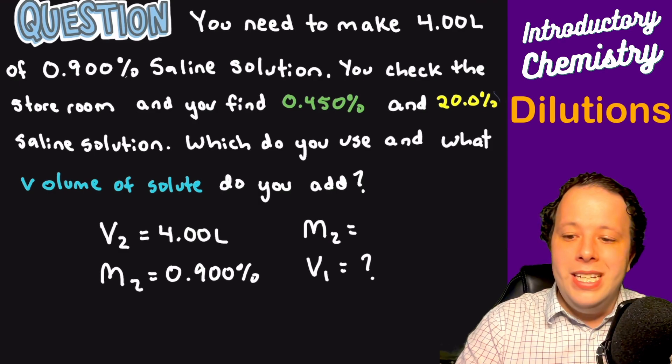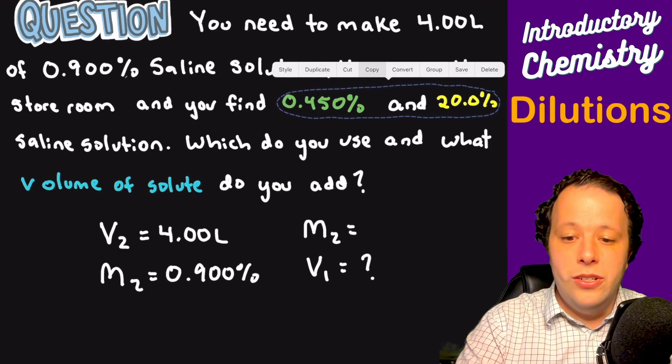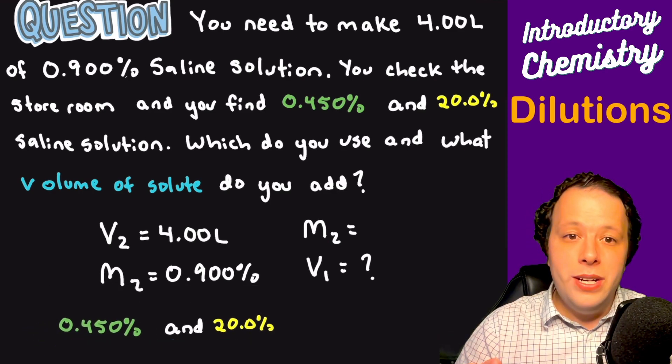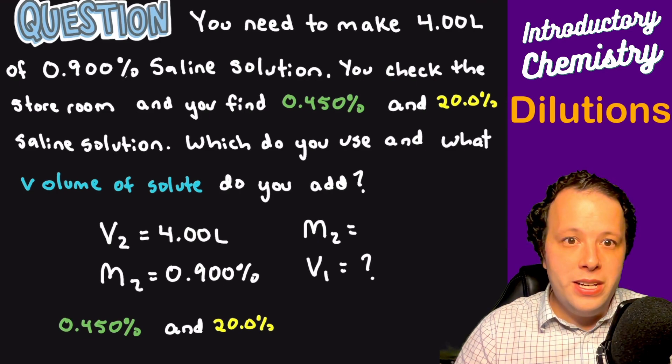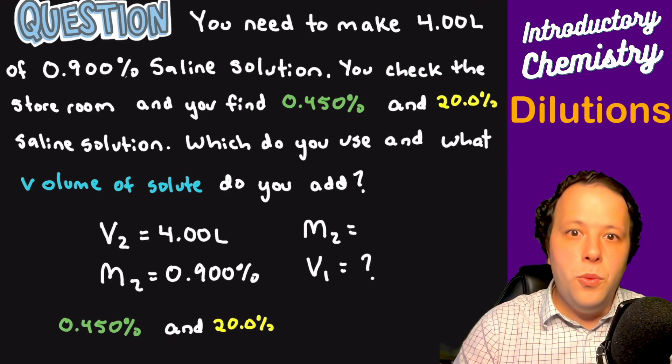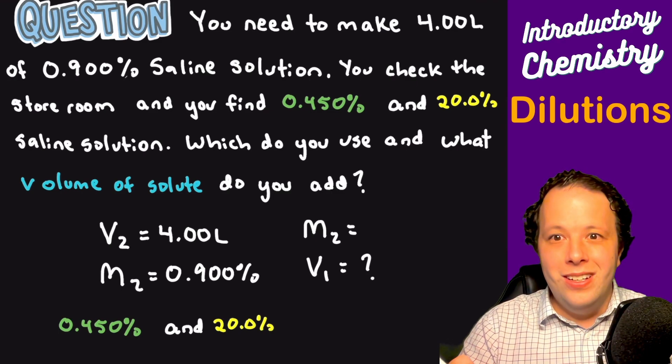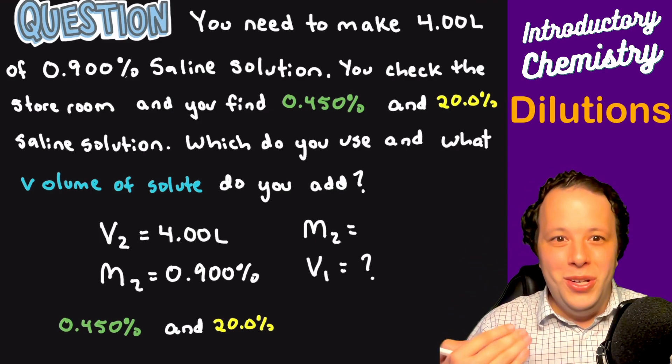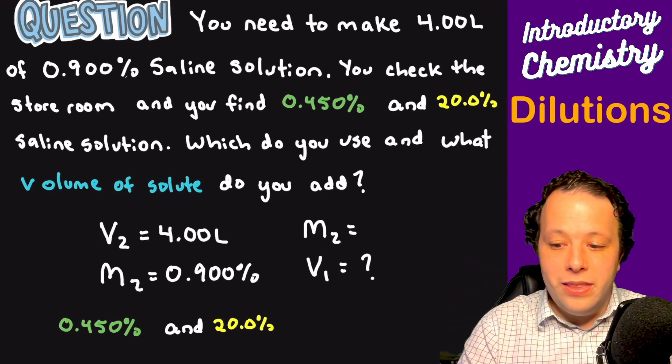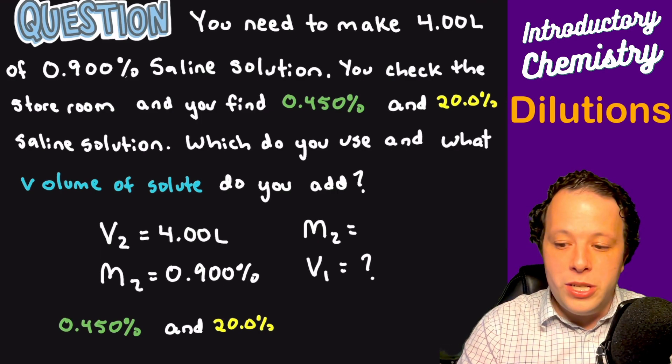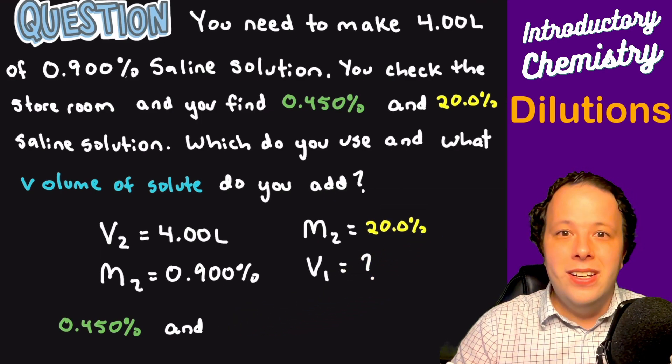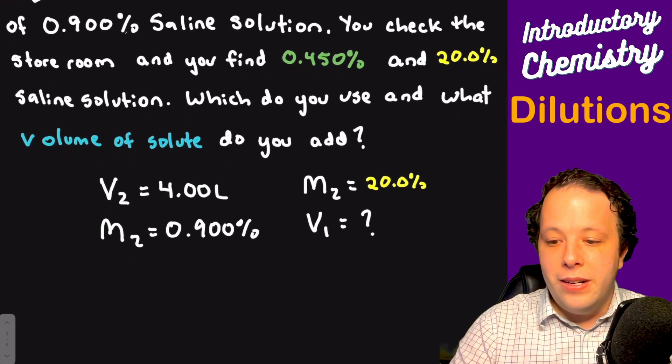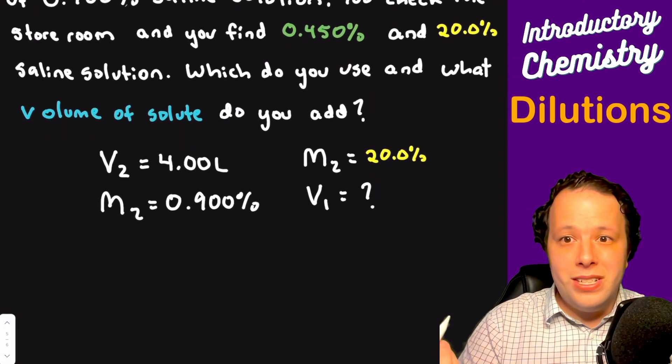What do you use to make this? You need to dilute the stock solution to do this. Which one can you dilute? Can you dilute 0.450% to 0.9 or can you dilute 20% to 0.9? Which one is making it less salty in this case? That is going to be the 20% because it's more concentrated. You need to go down. You cannot go up. So we will use the 20% here and set it up just like how we did the last problem.